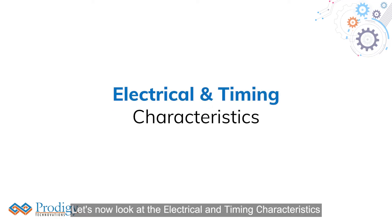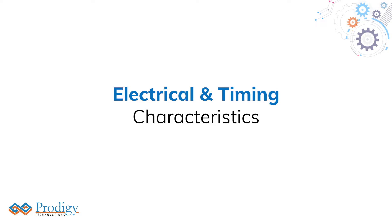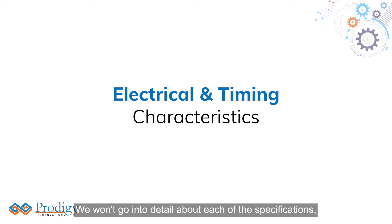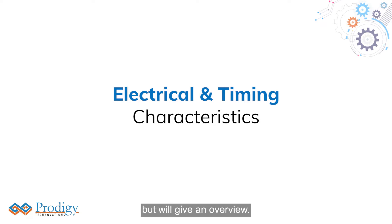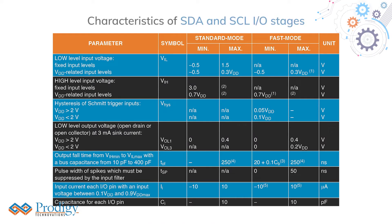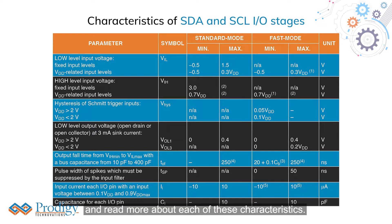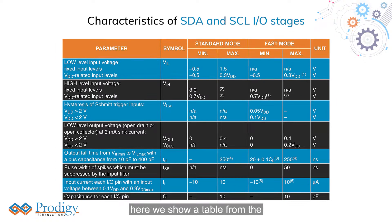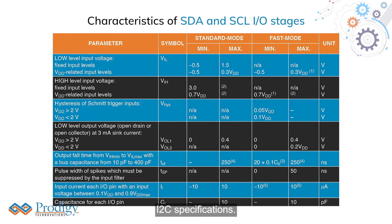Let's now look at the electrical and timing characteristics and how they are shown in the I2C specification. We won't go into detail about each of the specifications, but we'll give an overview. Manufacturers' datasheets for I2C will have details needed to operate I2C devices. However, you can search out the I2C specifications and read more about each of these characteristics. As an example, here we show a table from the I2C specifications.